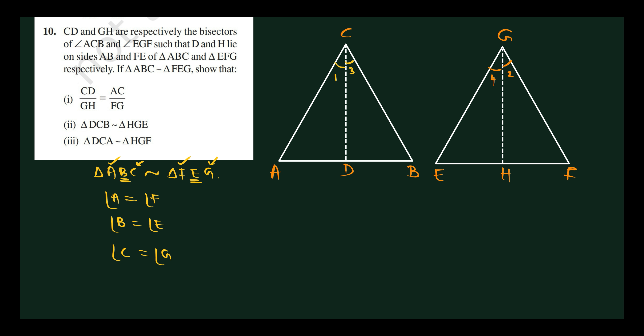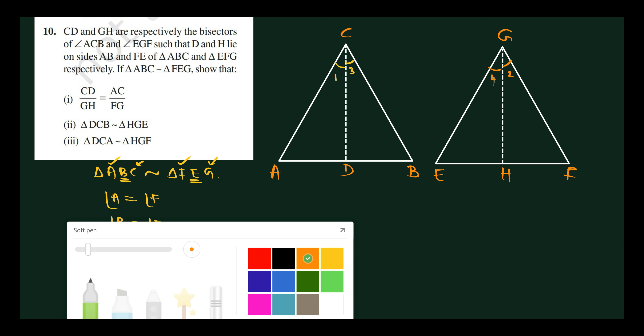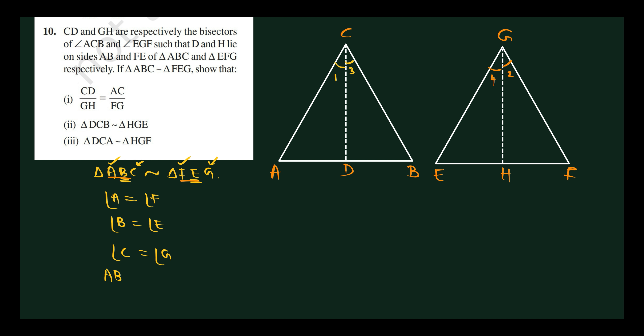Corresponding sides are in the same proportion: AB by FE equals BC by EG equals AC by FG. To prove CD by GH equals AC by FG — select triangles ACD and FGH. In triangle ACD and triangle FGH, angle A equals angle F.